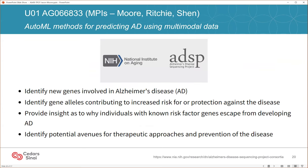I want to switch gears now and tell you about a new project to develop automated machine learning methods for the analysis of multimodal data in Alzheimer's disease. This is a U01 that was recently funded by the National Institute of Aging. Through the award of this grant, we were brought into the Alzheimer's Disease Sequencing Project consortium — specifically a consortium of PIs and grants funded to develop AI and machine learning methods for Alzheimer's disease. My co-PIs are Marilyn Ritchie and Li Shen from the University of Pennsylvania, and each of us has a project looking at different aspects of multimodal data analysis using automated machine learning.